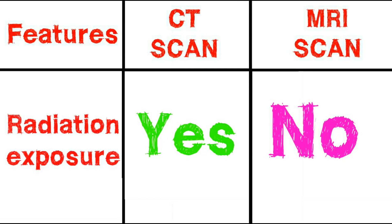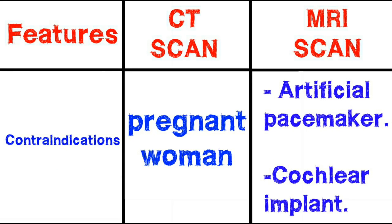The next feature is radiation exposure. CT scan has radiation exposure present, whereas MRI scan has no radiation exposure. Regarding contraindications: CT scan is avoided for pregnant women because radiation can affect the fetus. MRI is avoided for people who have an artificial pacemaker, cochlear implant, etc.